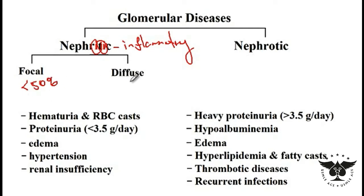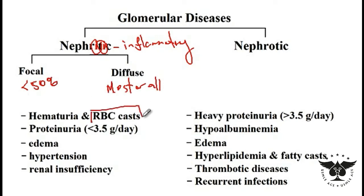Those that have the name 'diffuse' means that most or all of the glomeruli are affected. The clinical symptoms of nephritic patients include hematuria and red blood cell casts, and they present with proteinuria that is less than three and a half grams per day, compared to nephrotic syndrome which has more than three and a half grams per day.